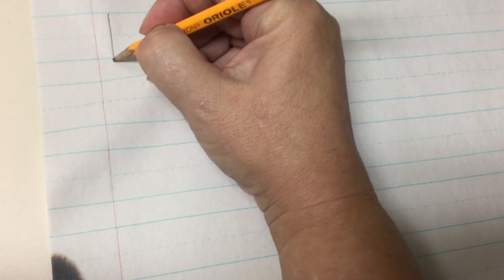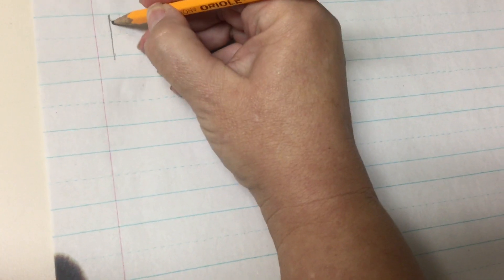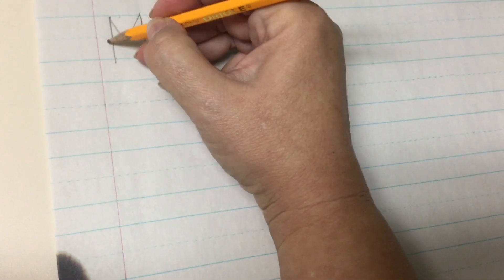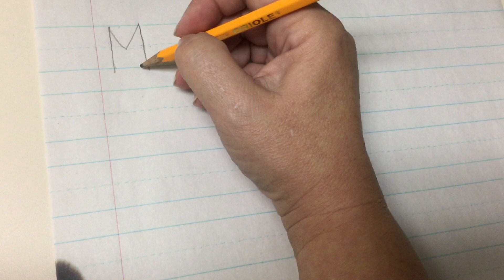Big line down. Little line down to the middle. Up and big line down. There's my M for Mrs. Clark.